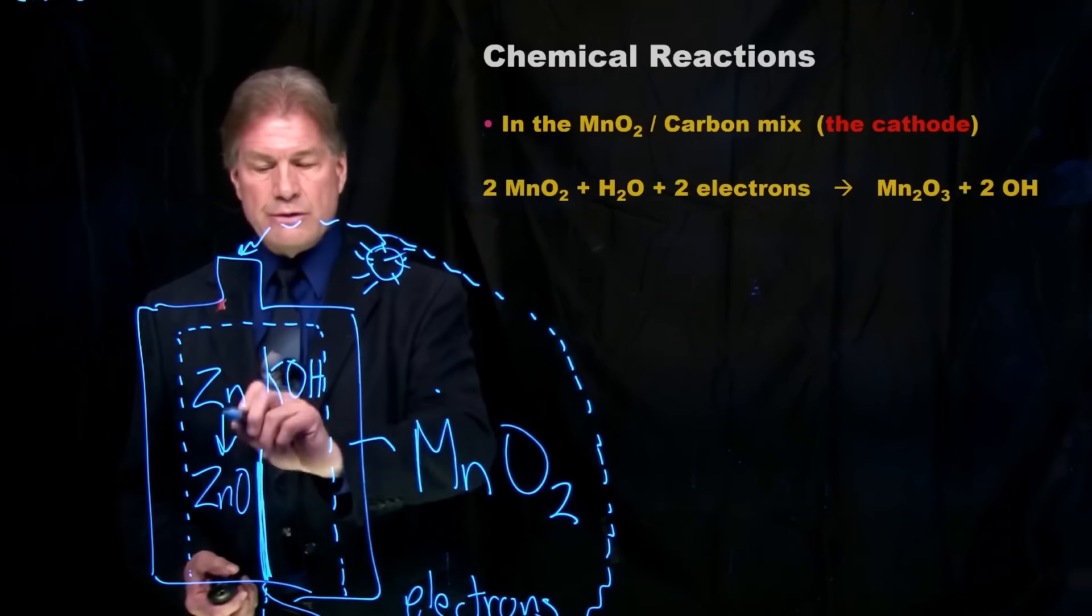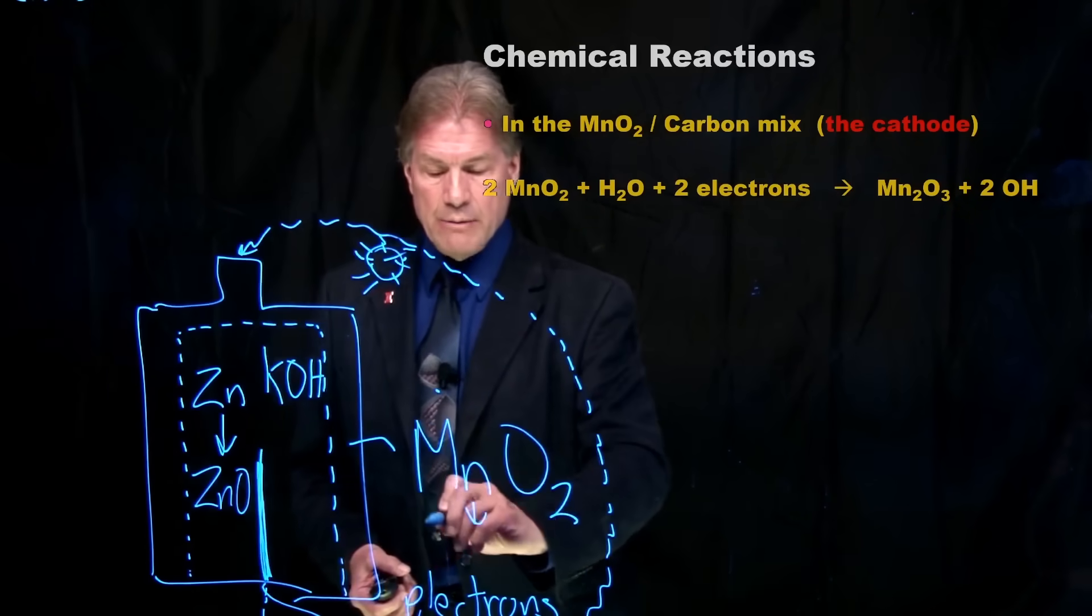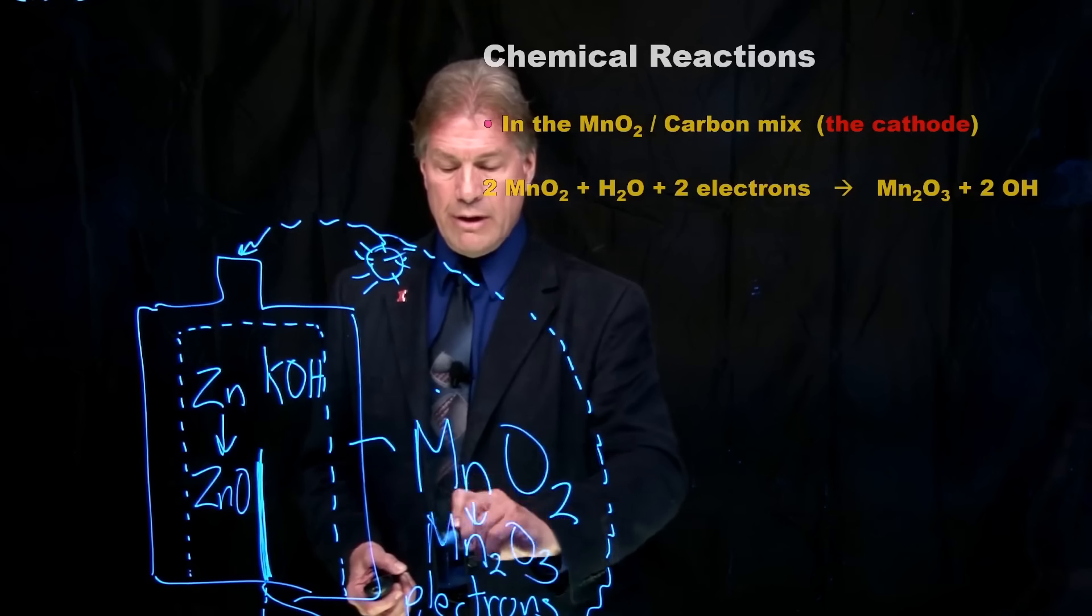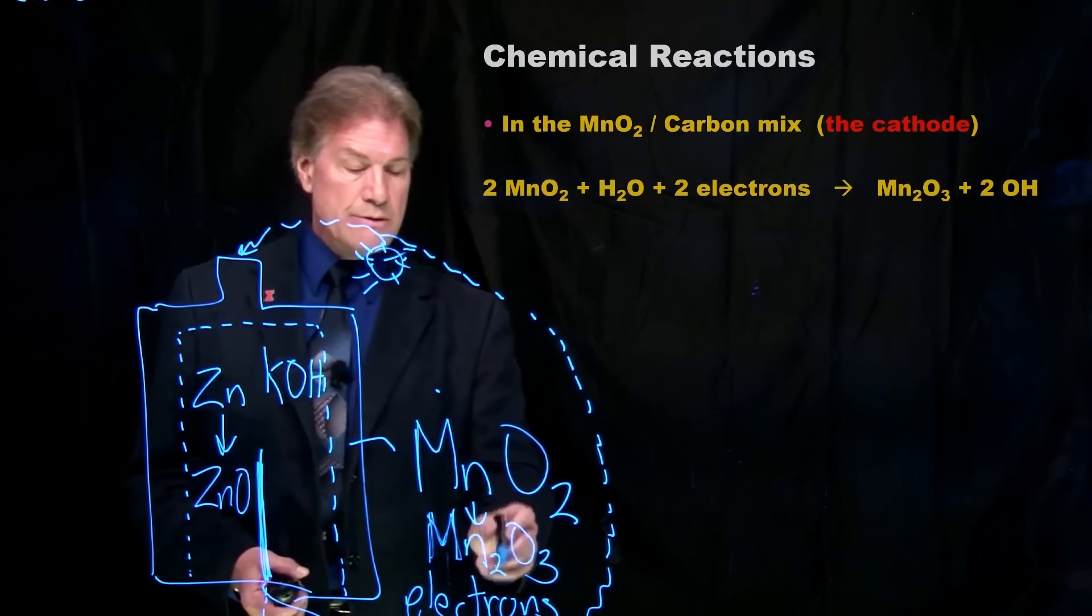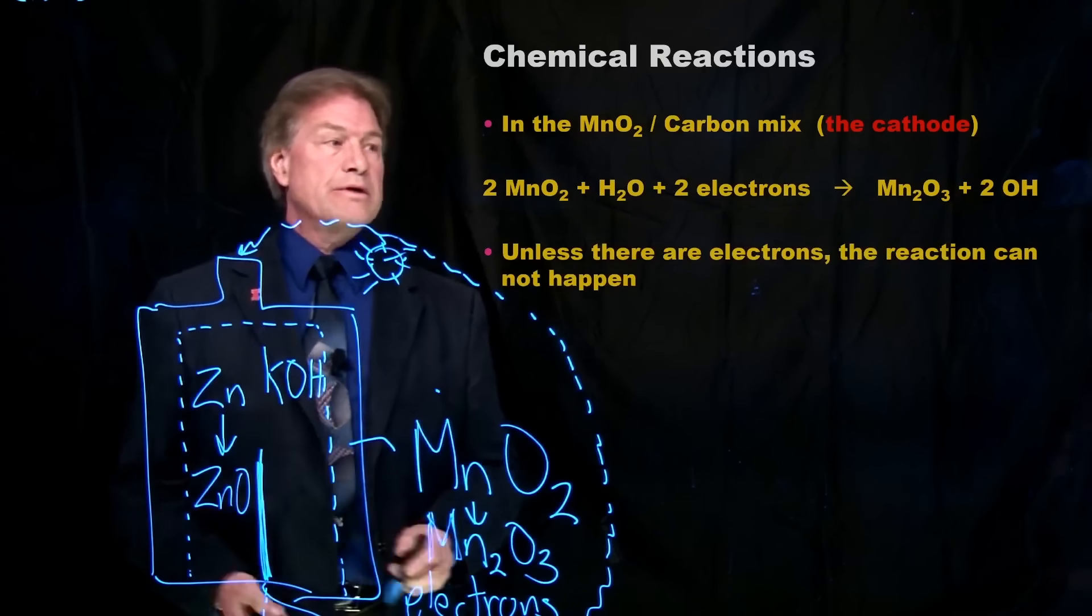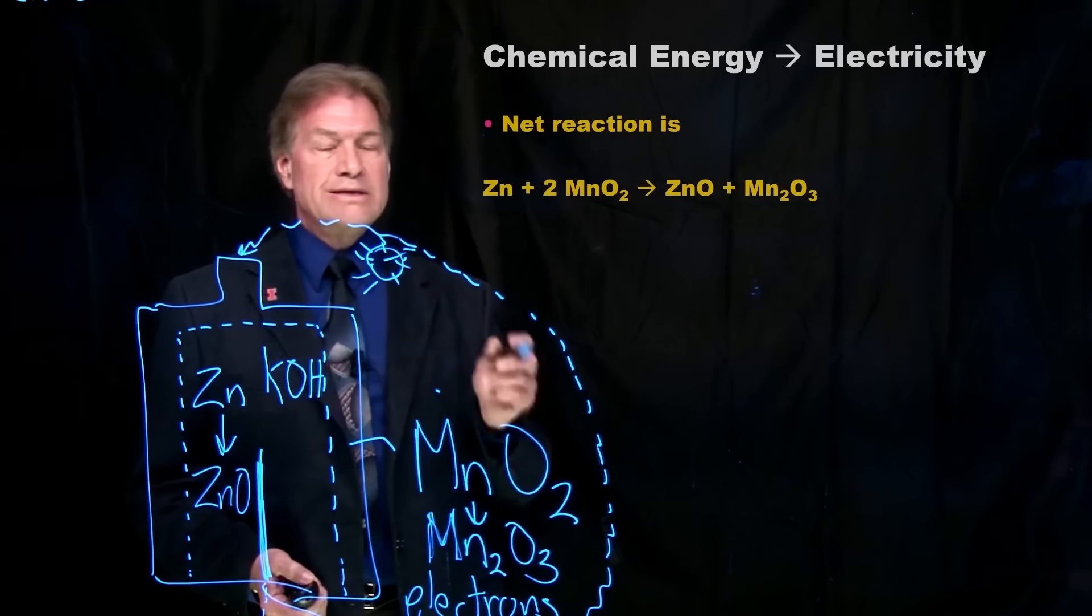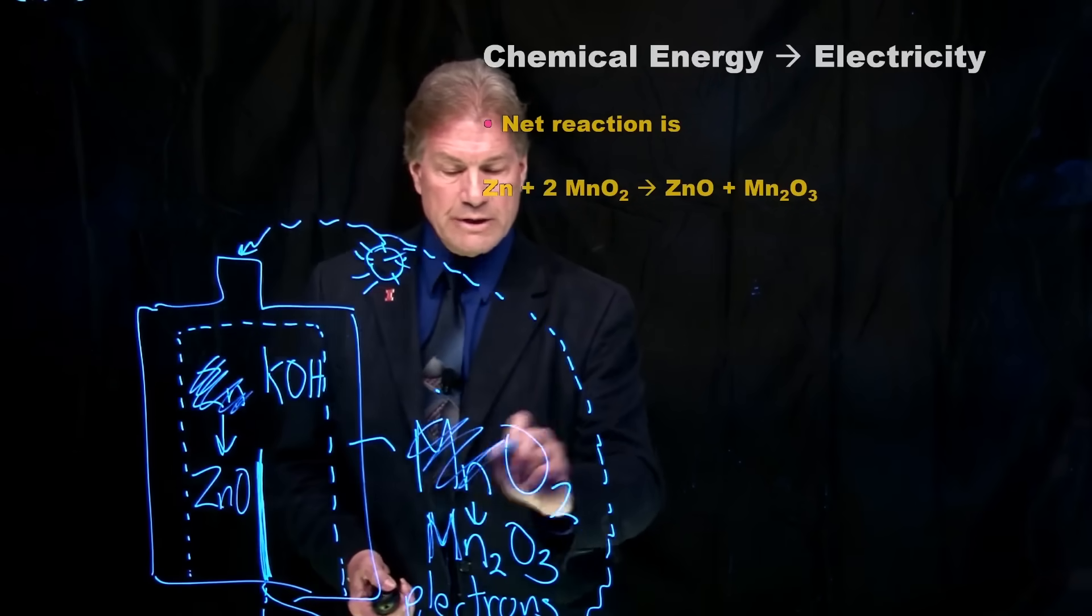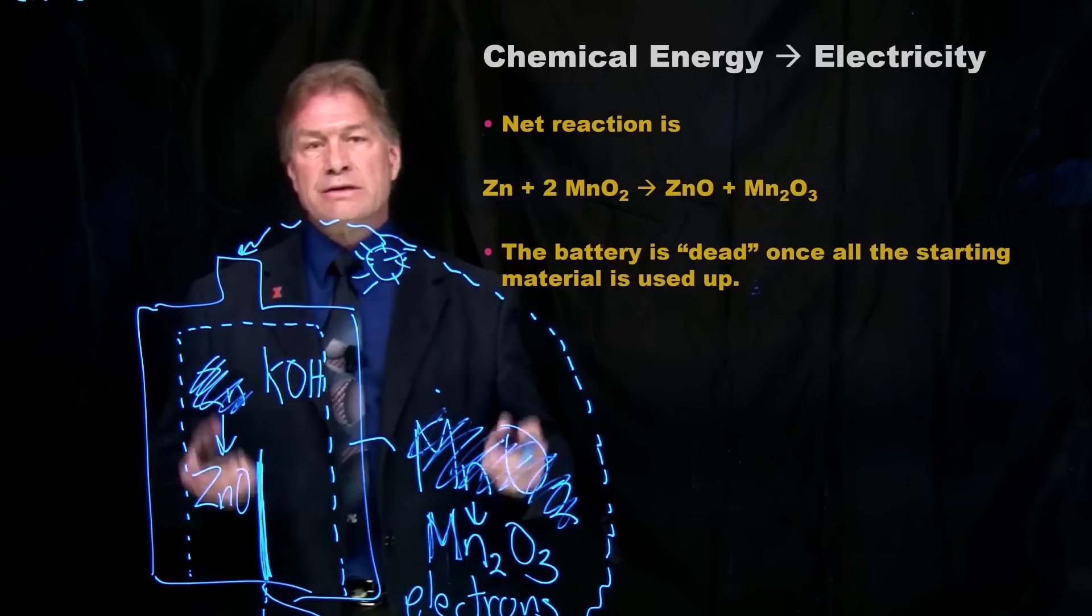So unless the electrons leave, nothing happens with the battery. Now, this turns zinc to zinc oxide in one case. But at this other electrode, this manganese oxide becomes a different version of manganese oxide, a more stable one, MnO3. Zinc turns to zinc oxide, manganese oxide turns to a more stable form of manganese oxide. Again, only when the battery is connected, but, of course, eventually the battery is dead. And when all the zinc is gone and turned into zinc oxide, and when all this manganese oxide is gone and turns into this form, the battery is dead.